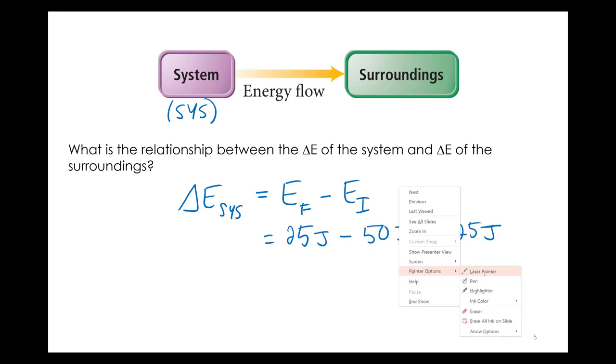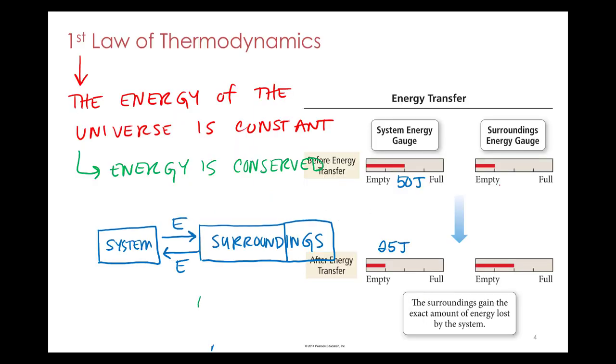So let's calculate the change in internal energy for the surroundings. Again, we'll have to make up our numbers. So quarter tank, what did we say? It was 25 joules.